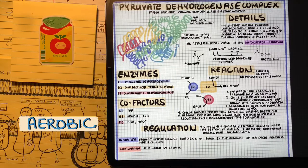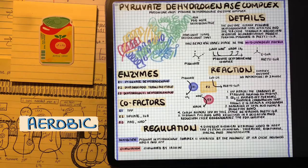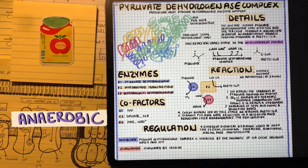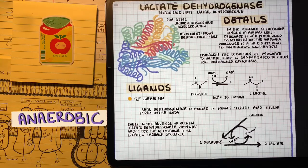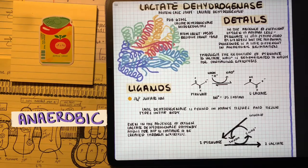But what happens when we are in anaerobic respiration, when there's not a lot of presence of oxygen? With anaerobic conditions, without the presence of oxygen, there's two types of pathways. But let's talk about the one that you do.